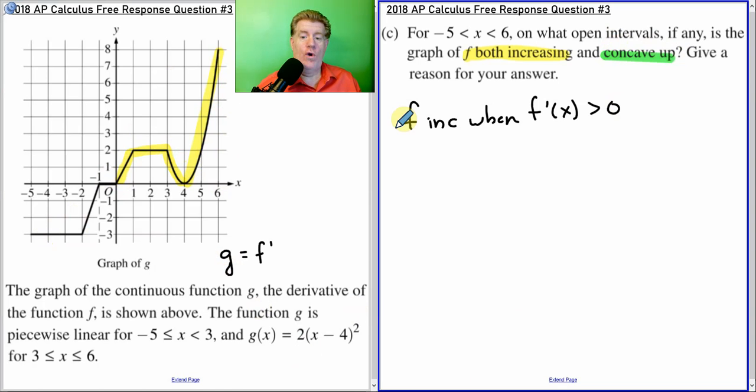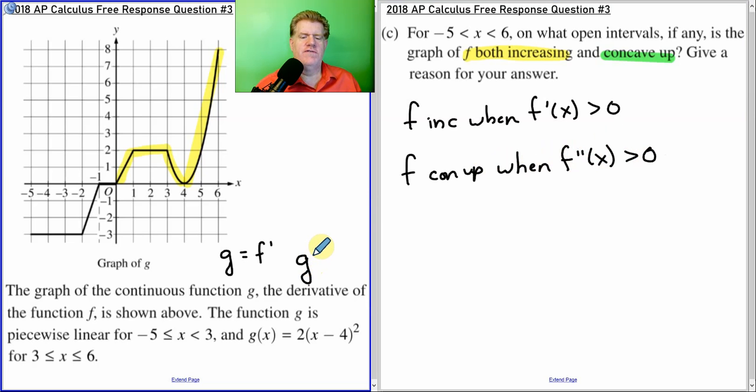Secondly, concave up. Well, we know that F is concave up when its second derivative would be positive. And remember, in this case, the second derivative of F is the first derivative of G. So, now we're looking at the slopes of G. Where do the slopes have a positive value? Well, let's look at it. Slopes are positive here. And slopes are positive here. So, what intervals are they both true?